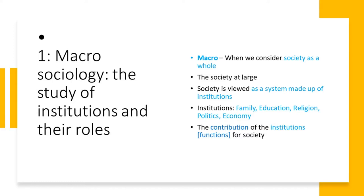Those institutions are family, education, religion, politics, economy, and many others that you study as part of your sociology lessons. We look at the contributions — the word we use very often is the functions of these institutions for society. How do these institutions contribute to the survival of society? This is mostly macro sociology: looking at society as a whole and the institutions of society.